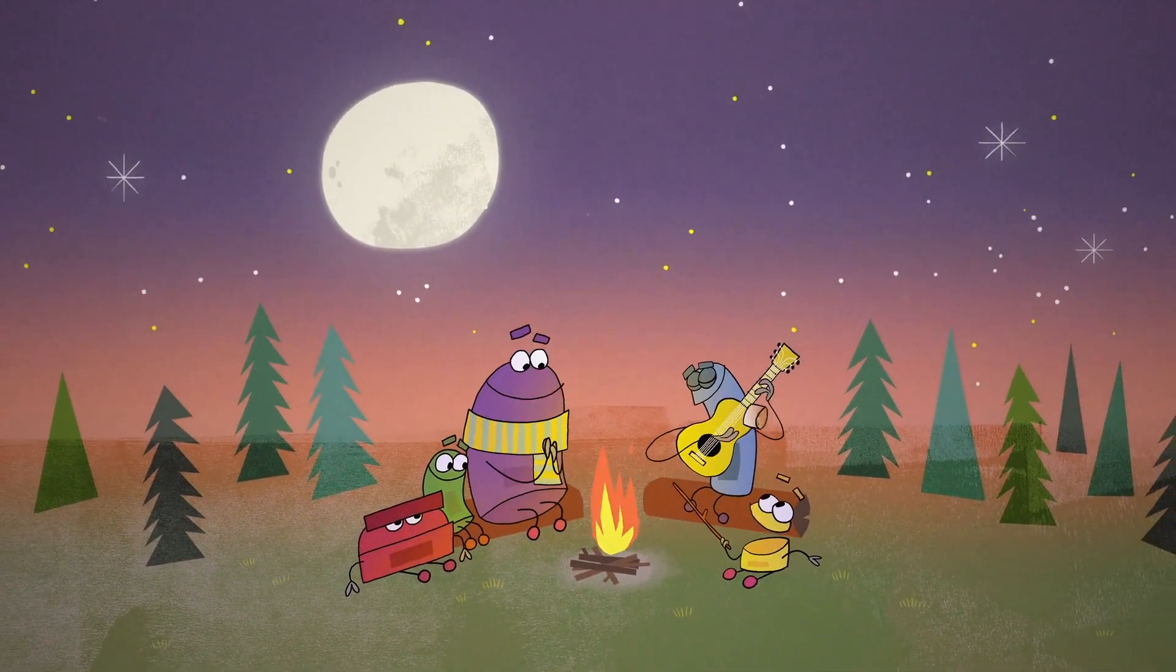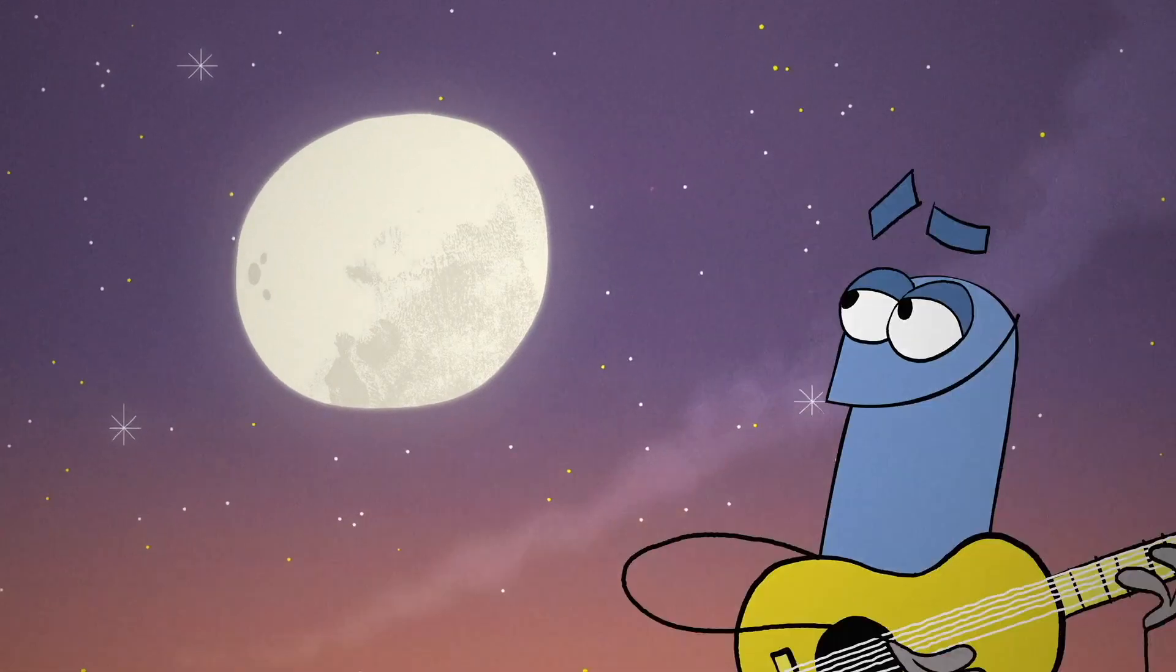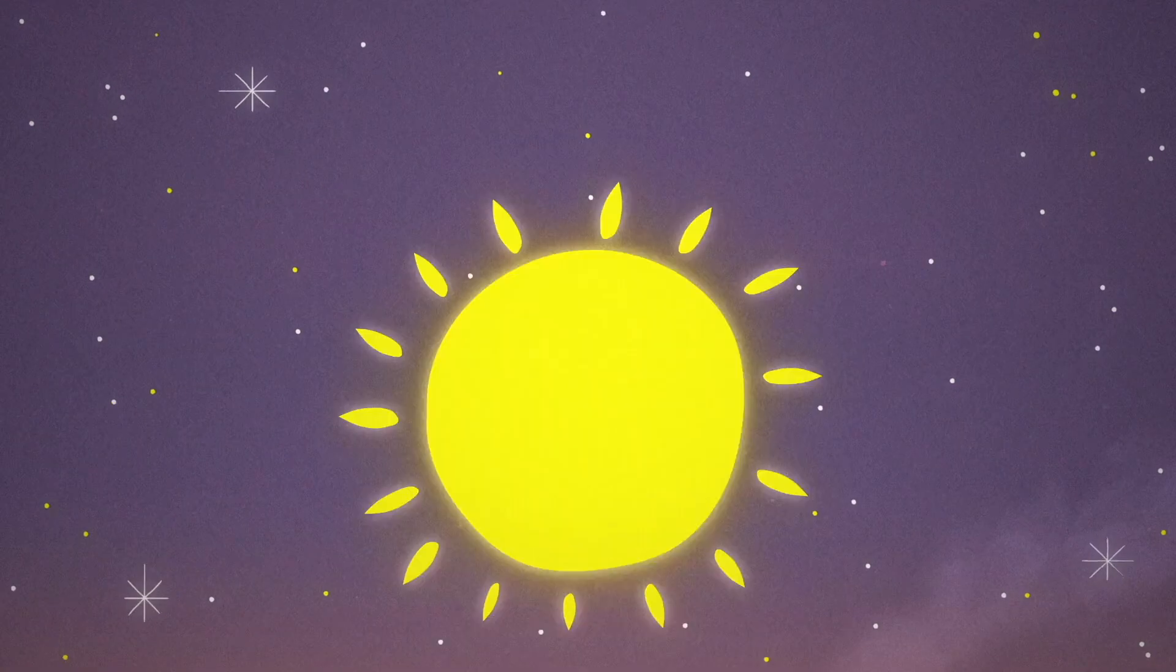When the moon shines in the clear night sky, you may begin to wonder why it seems to change from night to night. It's because of the way it reflects the sun's light.